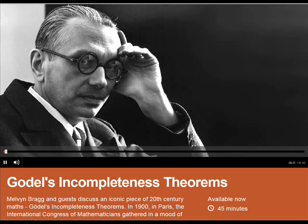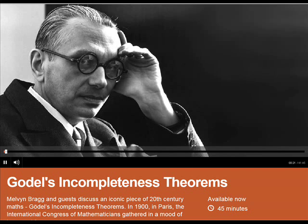He takes the statement: 'this statement cannot be proved.' What he does is produce something called the Gödel coding, which translates — that sounds like a statement about language, a sort of meta statement — but he produces a Gödel coding which actually uses prime numbers to change that into a statement about pure number theory. So we've got 'this statement cannot be proved,' and it's now just a statement about numbers, meaning something about numbers, using this Gödel coding.